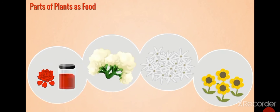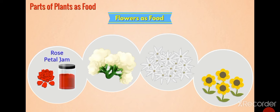Flowers look beautiful. Flowers of some plants are also used as food. For example, the sweet preserve known as rose petal jam, locally called gulkand, is prepared from rose petals. Similarly, flowers of plants like cauliflower, jasmine, sunflower are also used as food.